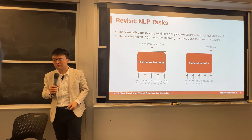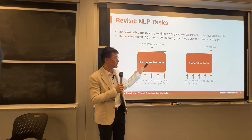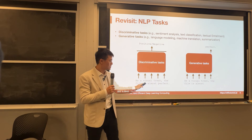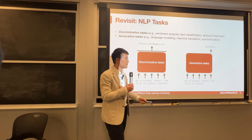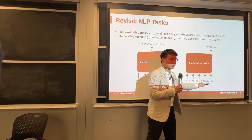There are two categories of natural language processing tasks. One is the discriminative task — for example, given the input sentence 'The film is almost perfect,' we want to classify the sentiment as positive or negative. The second category is the generative task: given the first couple of words, predict the next word in the sentence.